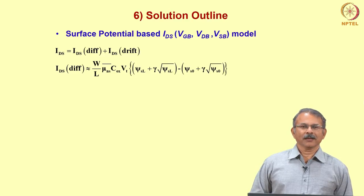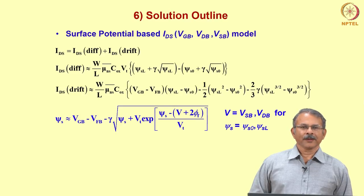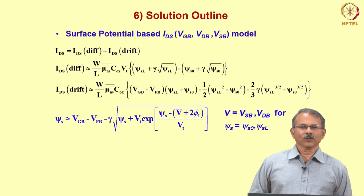The diffusion current expression and the drift current expression are as shown. This is the expression for the surface potential in terms of the gate-to-bulk voltage and the channel voltage V. When you substitute the source-to-bulk voltage in the channel voltage, you get the surface potential at the source; similarly, when you substitute the drain-to-bulk voltage, you get the surface potential at the drain.